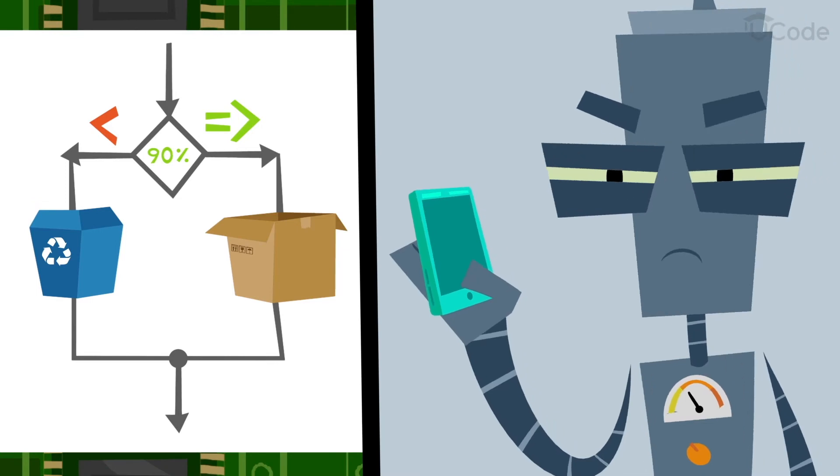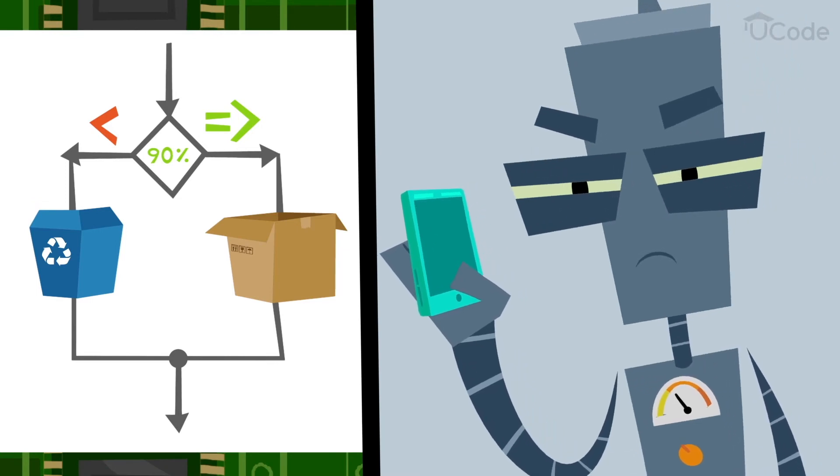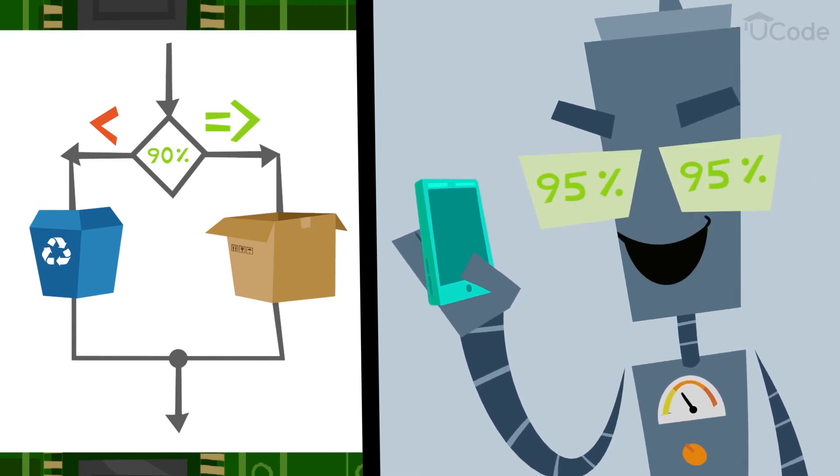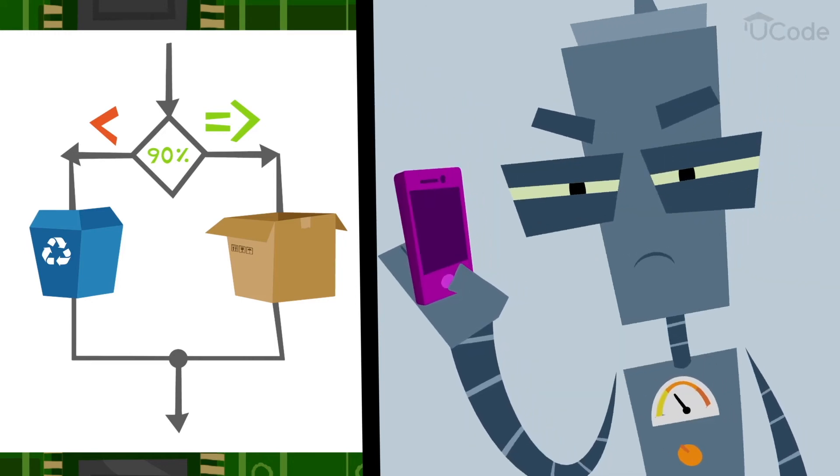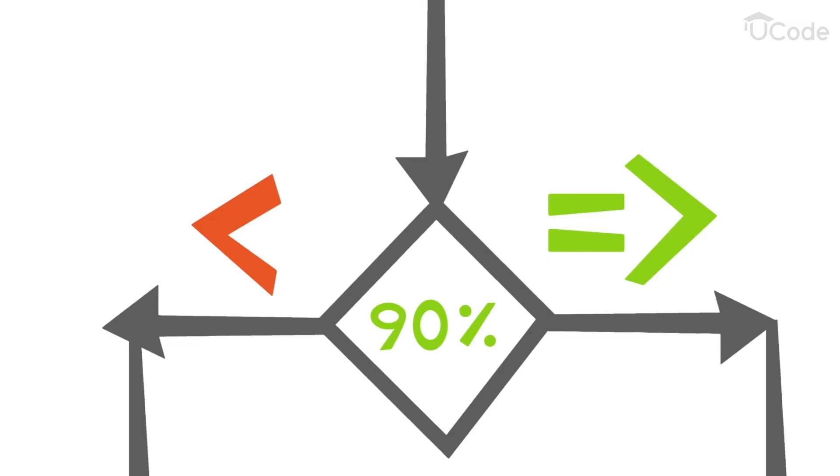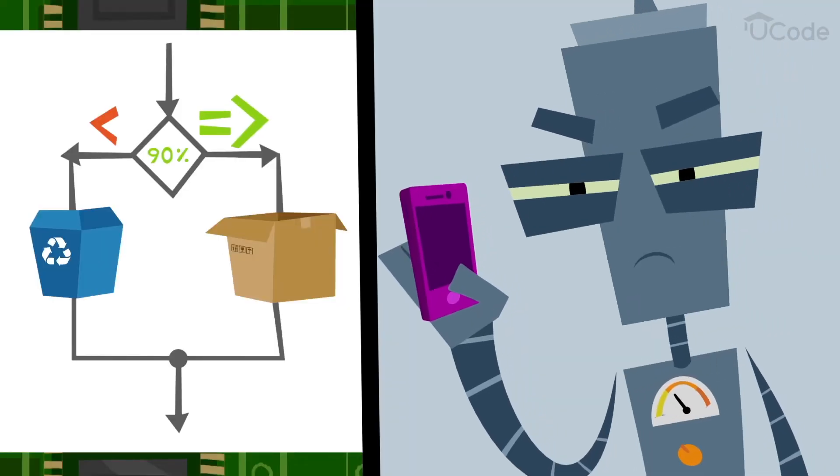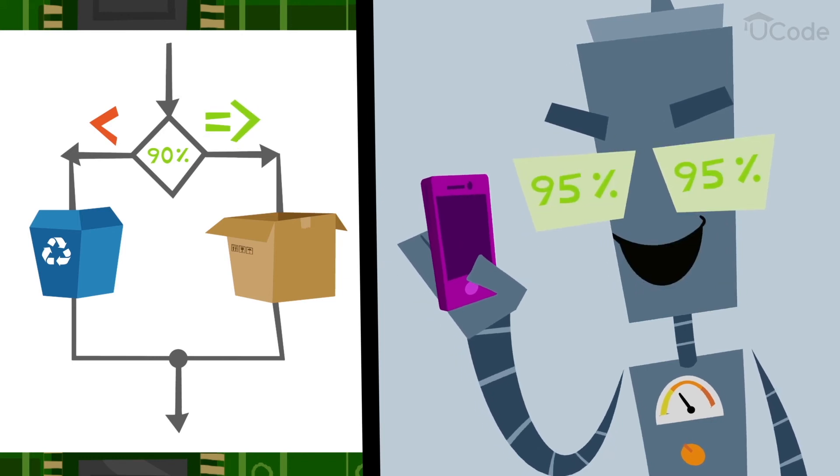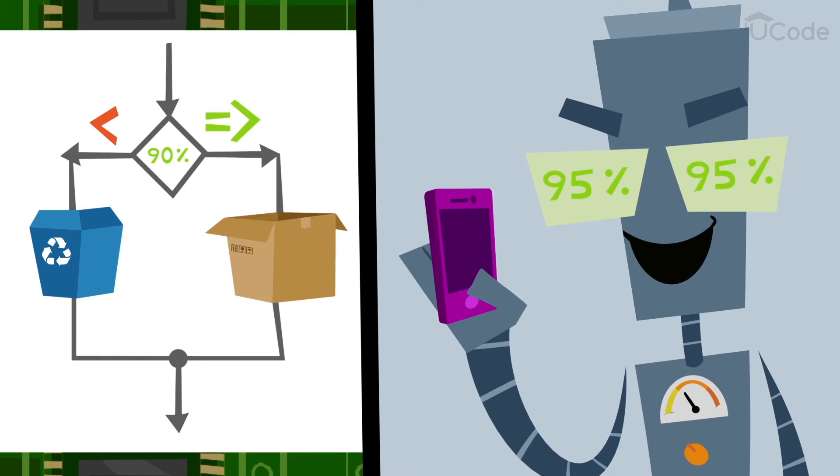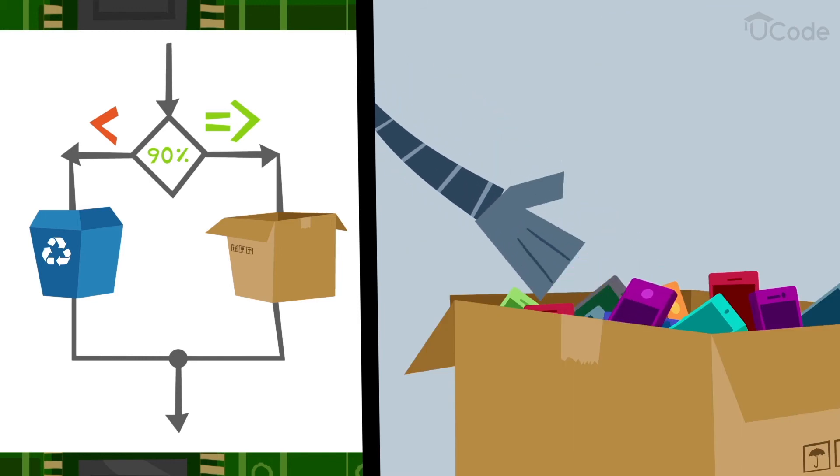The way the robot makes this decision is to compare the value from the test score with a second value, a passing score for quality. This second value is called a condition. If the test score is equal to 90 or greater than 90, the condition is said to be true, and the program instructs the robot to put the phone in a box.